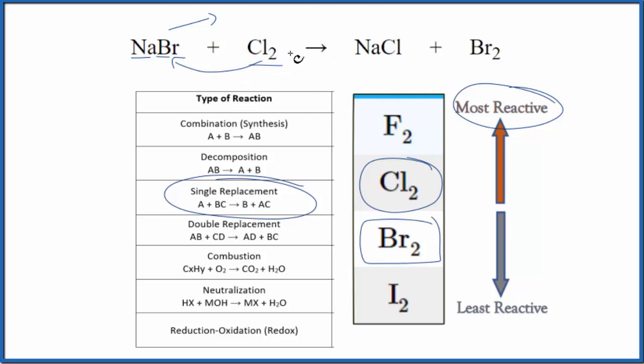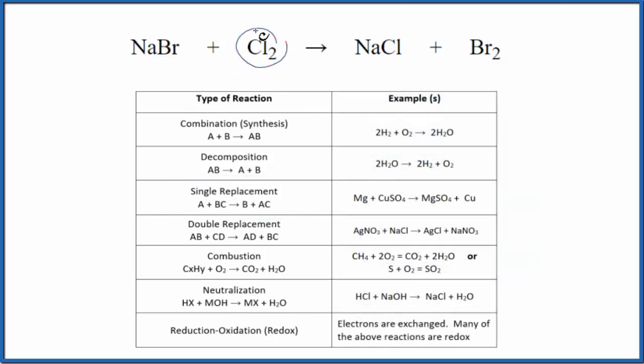Let's balance this equation and then talk a little bit about redox reactions. I can see I have two chlorines here and just one, so let's put a 2 in front of the NaCl. Now I have two sodiums, so I need to put a 2 here. Two sodiums, two bromines, two bromines here. That's the balanced equation.